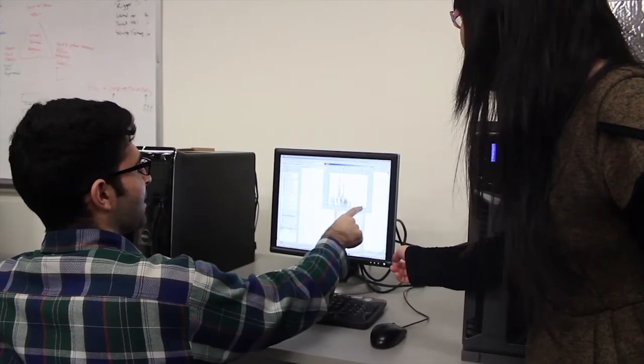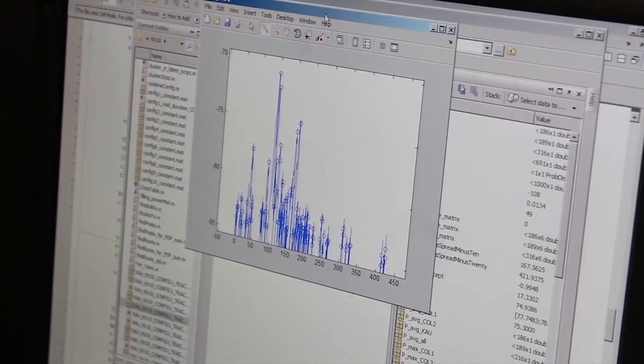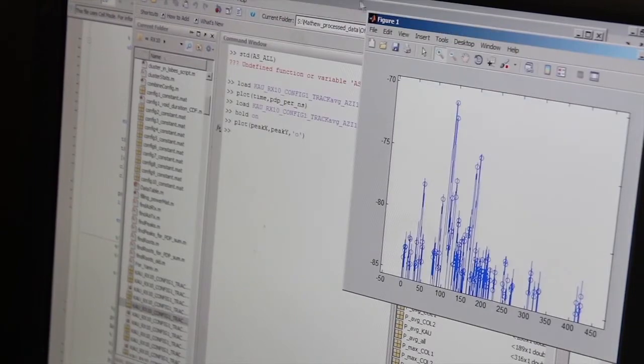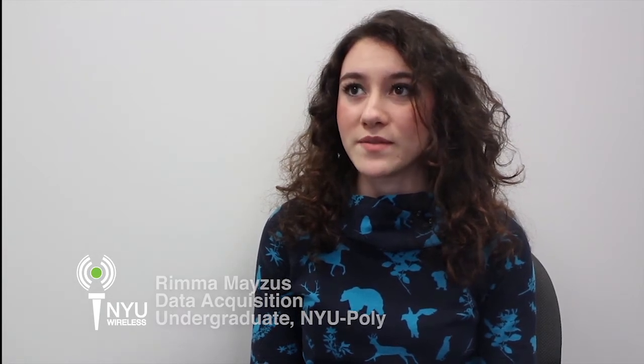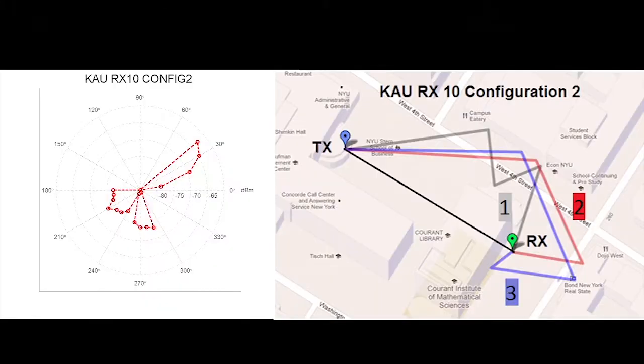The raw data was saved in simple text files containing received power over time. These files were post-processed to produce meaningful statistics. We generate propagation statistics such as the angular spread of the departing and arriving radio waves, the average number of unique directions to receive energy, and how long the radio waves propagate in the environment.